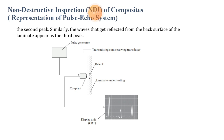For the pulse echo system diagram, the CRT display unit is shown here. The laminate under testing is depicted in the center. On the left side is the pulse generator, and the transmitting-cum-receiving transducer is used.